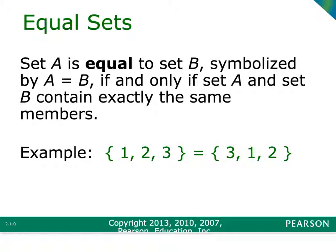Sometimes they'll ask you whether two sets are equal. In order to be equal, all of the elements in the first set must be the same as the elements in the second set. It is okay if they're listed in a different order — as long as all the elements are identical, they're equal. For example, the set {1, 2, 3} and the set {3, 2, 1} are equal even though they're out of order, because they have the same elements.